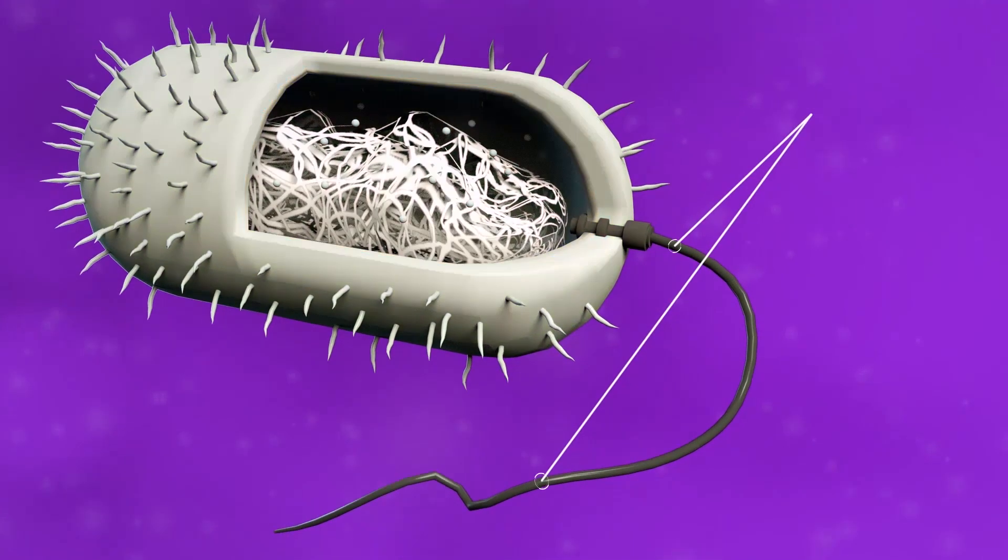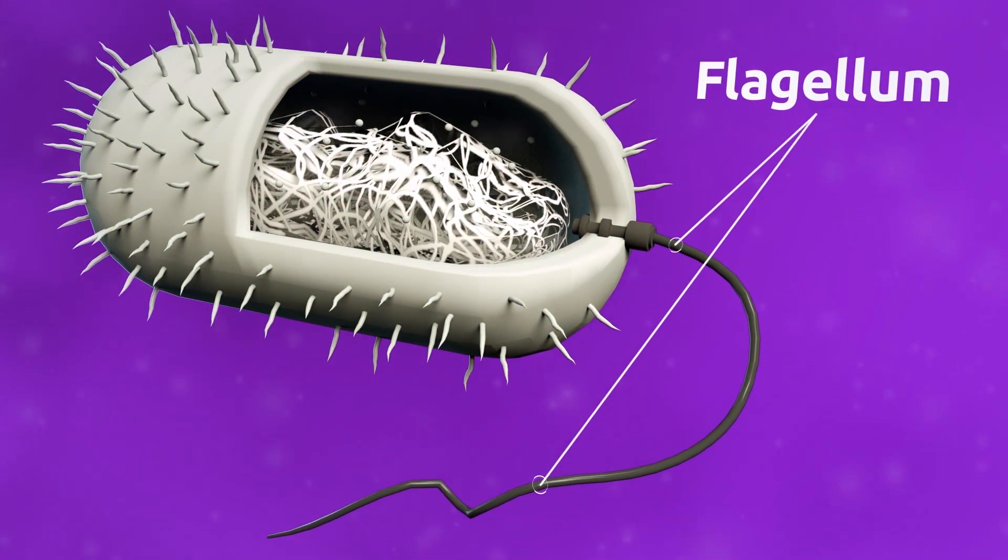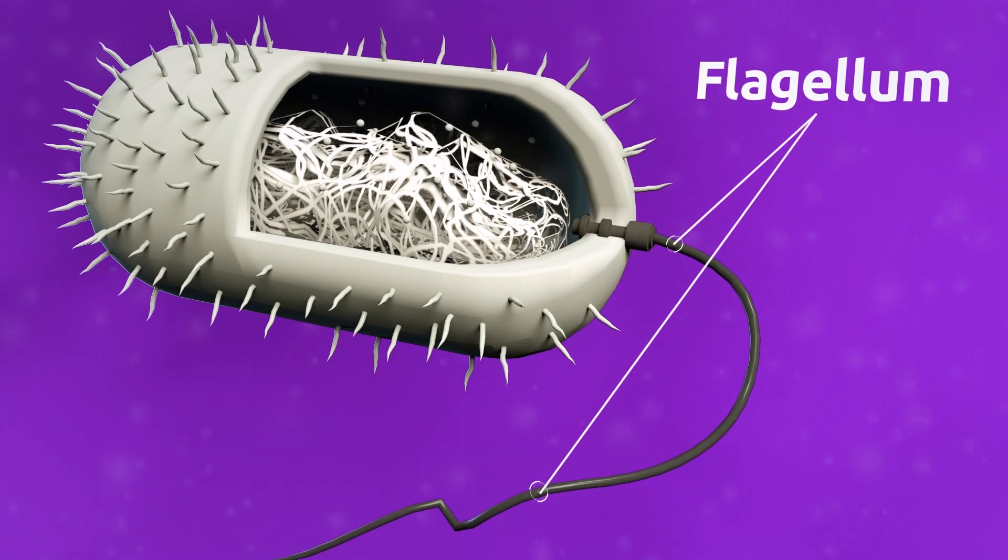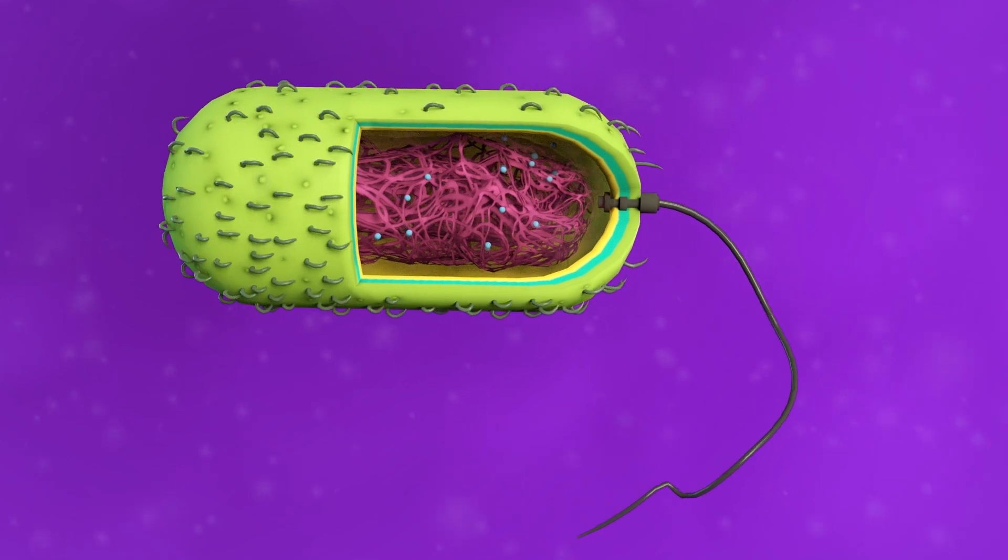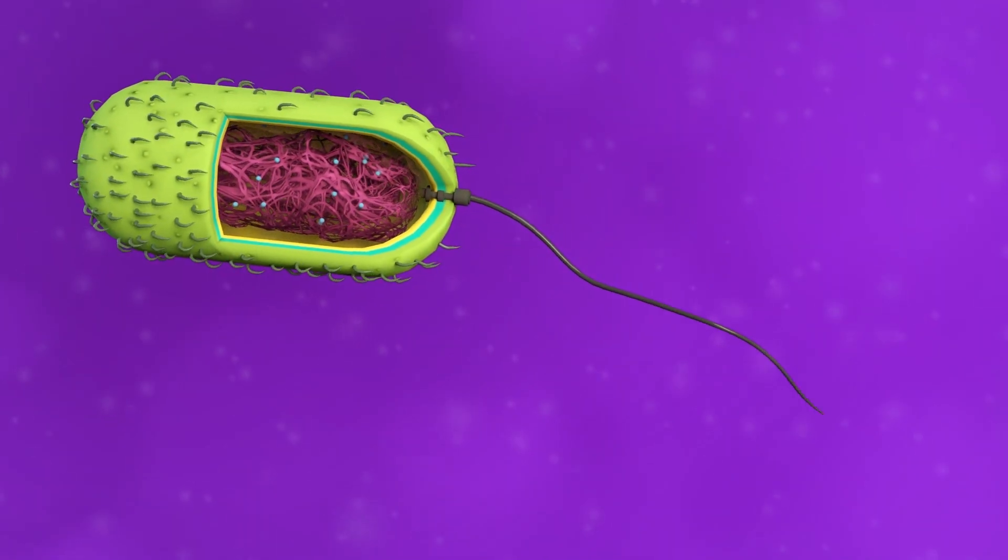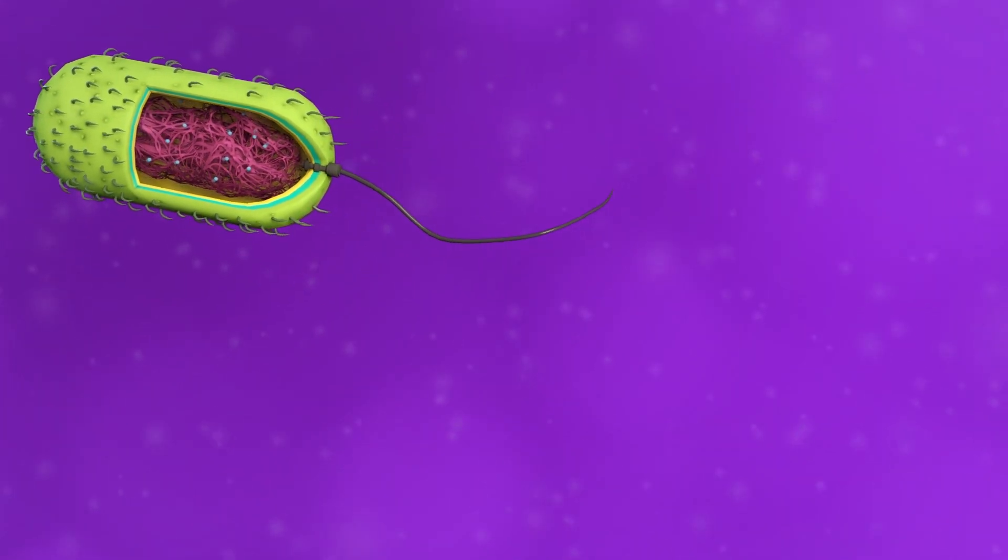The flagellum is found in some prokaryotic and eukaryotic cells. It's a lash-like appendage which allows a cell to move. Sperm cells, for example, move via flagella.